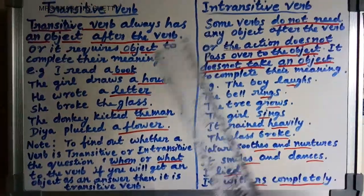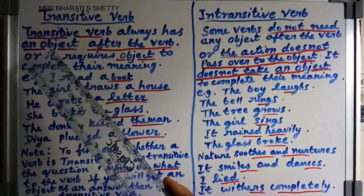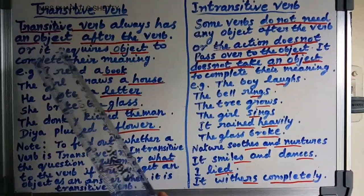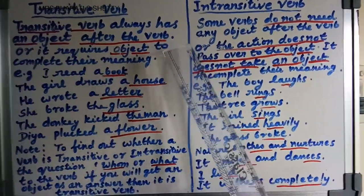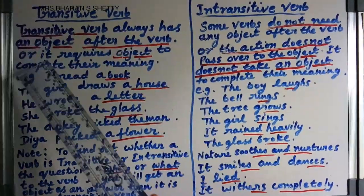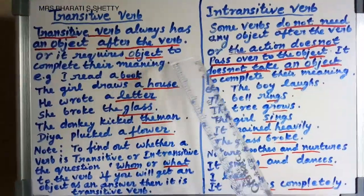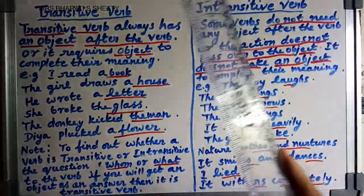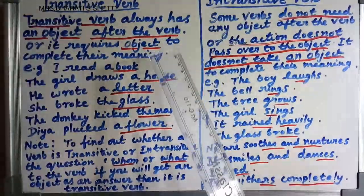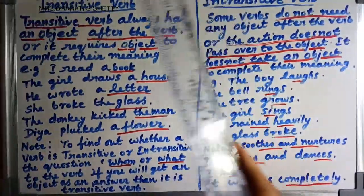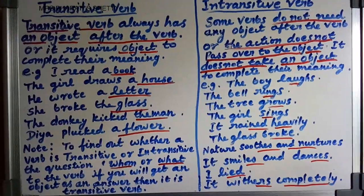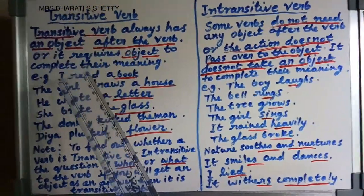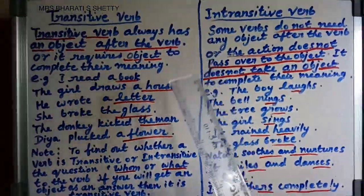Now listen. What is a transitive verb? A transitive verb always has an object after the verb, or it requires an object to complete its meaning. After the verb, we can see an object in a transitive verb.